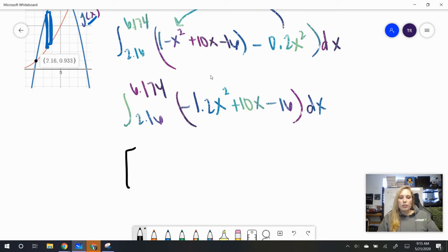Increase it by 1, so negative 1.2 divided by 3—12 divided by 3 is 4—so this is going to be negative 0.4x cubed. Increase this by 1, it's going to become a 2. 2 divided by 2, this is going to be plus 5x squared, and this is going to be minus 16x. And we need to evaluate from 2.16 to 6.174.